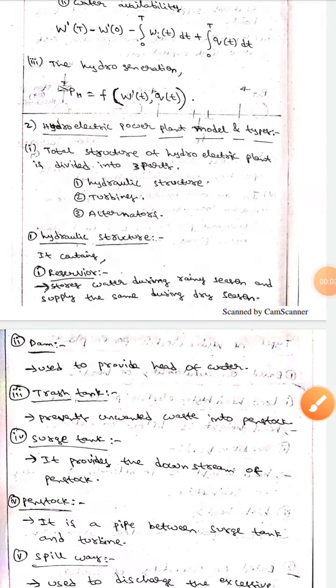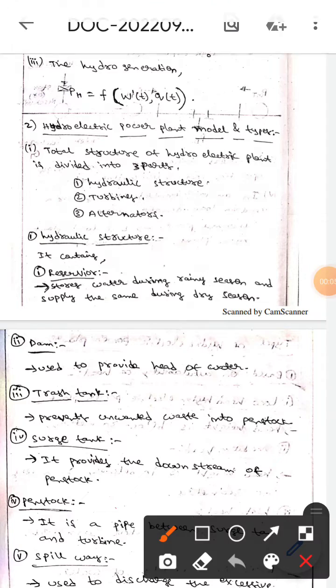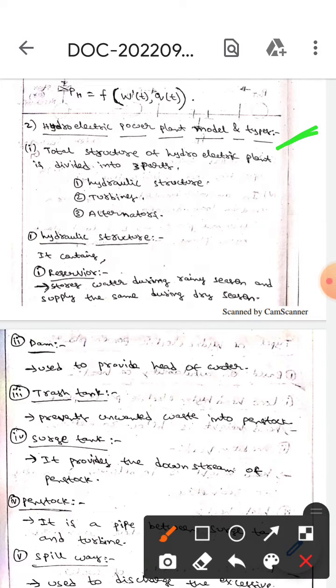Hello guys, I hope you are all fine. Today we are here to discuss hydroelectric power plant models and their types. Let's get into the topic. The total structure of a hydropower plant is divided into three parts: hydraulic structures, turbines, and alternators.